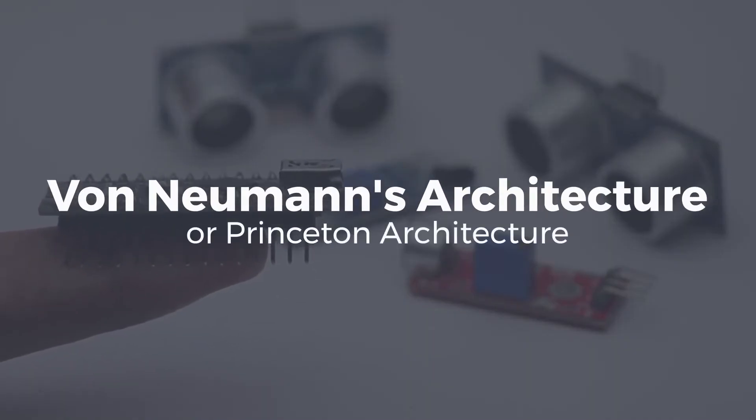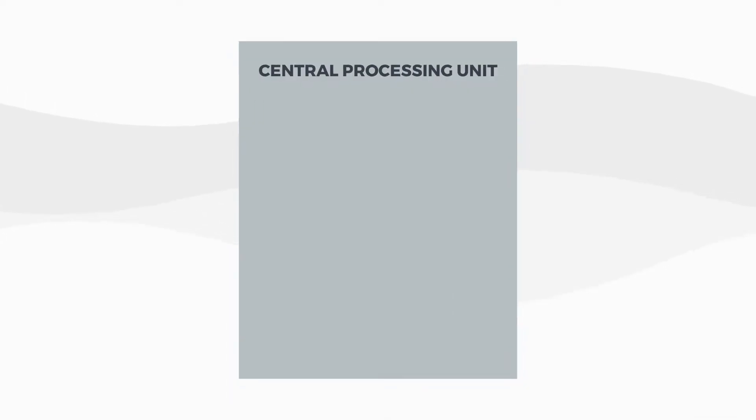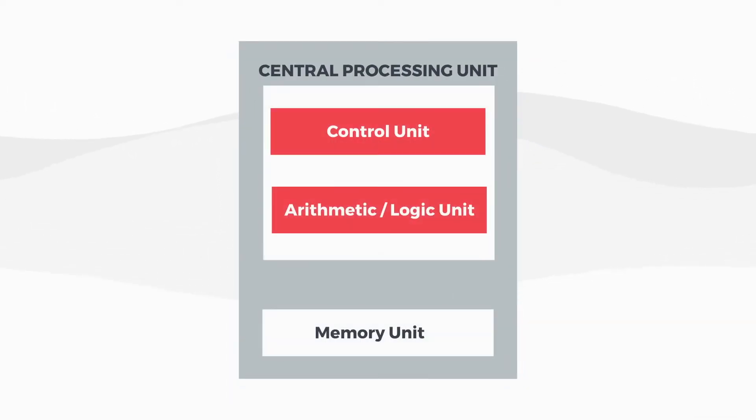So how do microcontrollers function? Almost every microcontroller is based on von Neumann's basic computer architecture, also known as Princeton architecture. It divides the system into four basic components: a control unit, an arithmetic logical unit, memory, and input and output circuits.